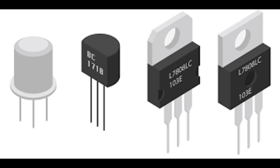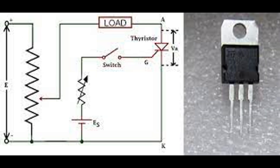A thyristor's structure is essential to its functionality. It is a four-layer, three-junction semiconductor device made from alternating layers of P-type and N-type materials. The thyristor consists of four layers arranged in a PNPN structure, forming three PN junctions: J1 (between the first P layer and the first N layer), J2 (between the first N layer and the second P layer), and J3 (between the second P layer and the second N layer).